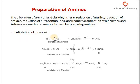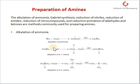Let's start one by one to see how the carbon-nitrogen bond is formed and how primary, secondary, tertiary, and quaternary ammonium salts are formed. The first preparation is alkylation of ammonia. Ammonia reacting with an alkyl halide leads to the formation of primary amines. This primary amine can also react with another alkyl halide to form a secondary amine, which can further react with an alkyl halide to form a tertiary amine. Therefore, alkylation of ammonia leads to a mixture of products.